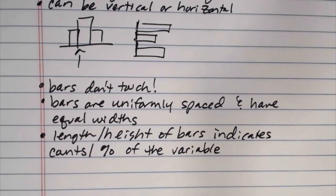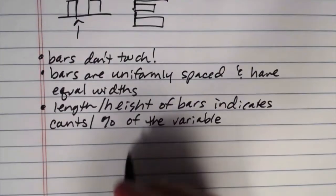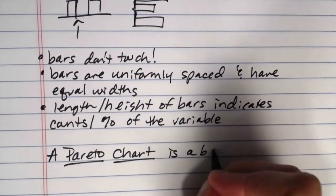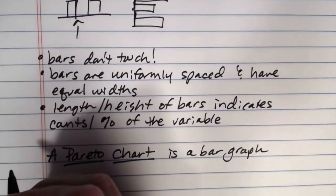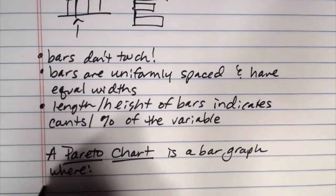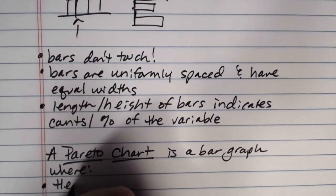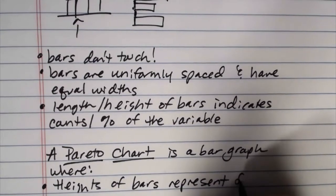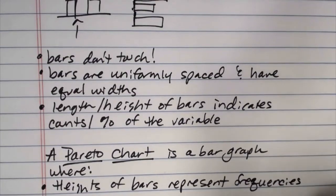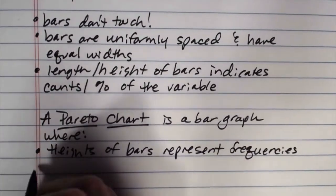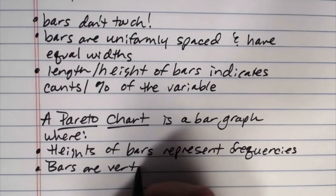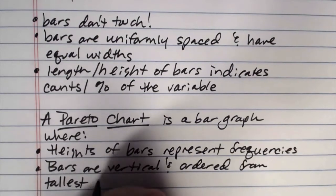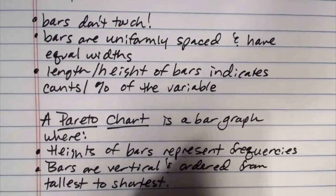Now there is a special kind of bar graph called a Pareto chart. A Pareto chart is a bar graph where the heights of the bars represent frequencies rather than percentages, the actual counts. And then bars are vertical and ordered from tallest to shortest.